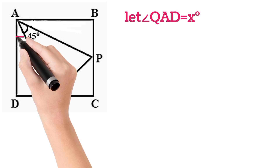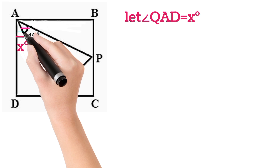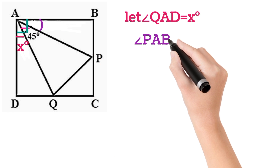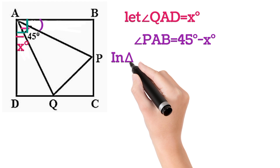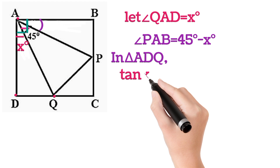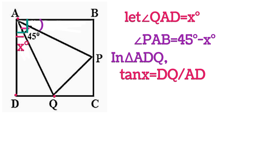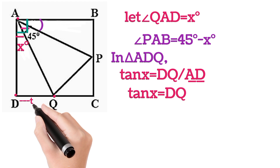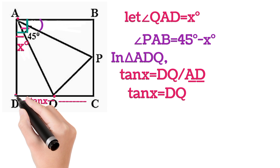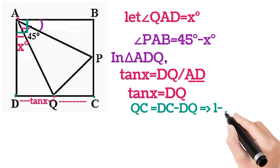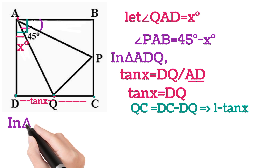Looking at the given figure, let us assume angle QAD is x degrees. This angle PAQ is 45 degrees, and the total angle at A is 90 degrees, so angle PAB will be 45 − x degrees. In triangle ADQ, we can write tan x = DQ / AD. Since AD = 1, tan x = DQ. To find QC: QC = DC − DQ = 1 − tan x.